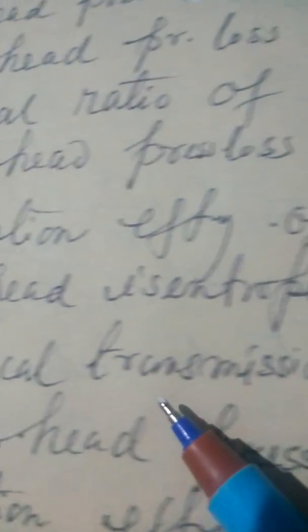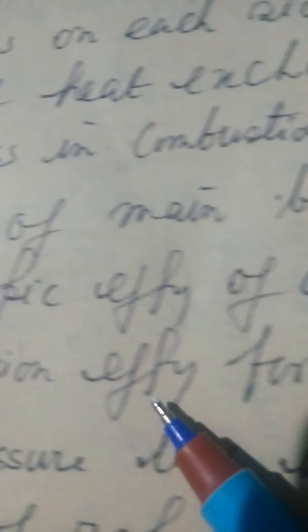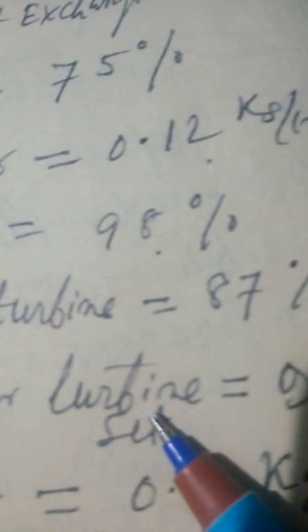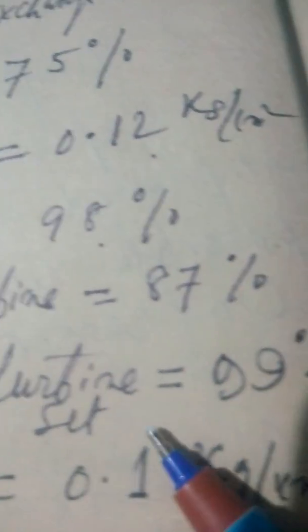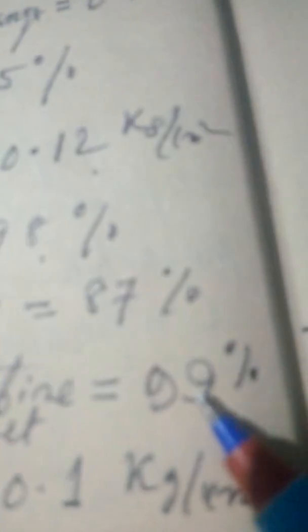Mechanical transmission efficiency for compressor turbine set is equal to 99%.